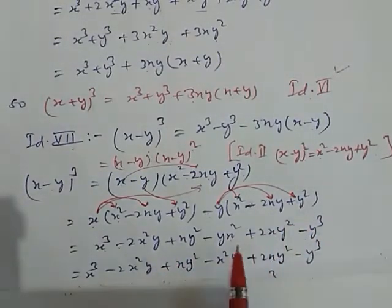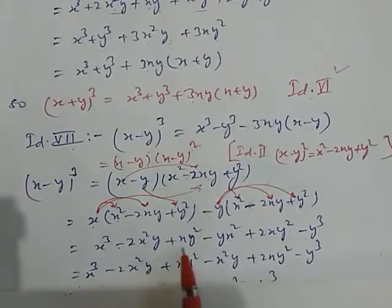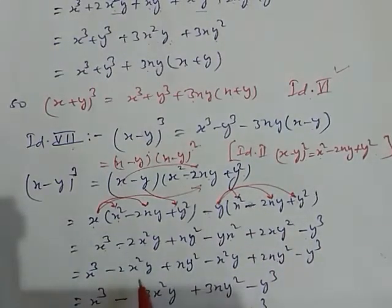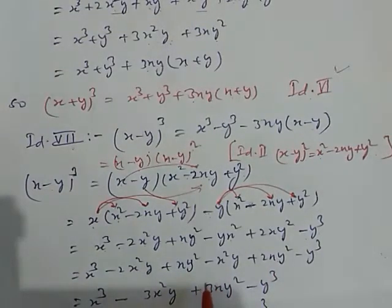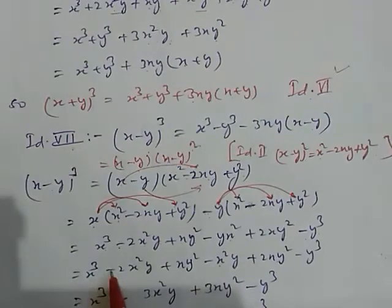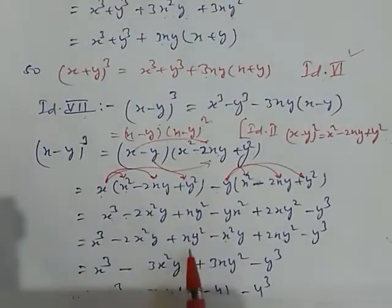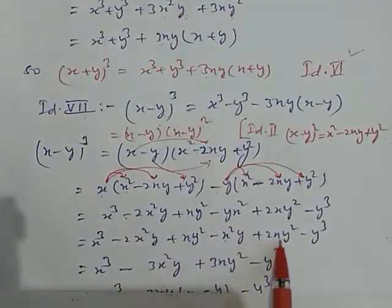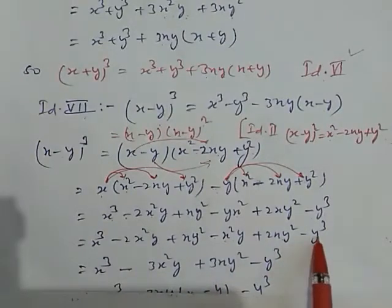Now rearrange them. Here: x cubed, minus 2x squared y, plus xy squared. This yx squared can be written as x squared y. 2xy squared, minus y cubed. Now check where the similar terms are. Twice x squared y and x squared y are the same term, having the same sign — we add them. Twice x squared y minus x squared y becomes minus 3x squared y. And xy squared plus twice xy squared are also the same terms having the same sign, so we add them: xy squared plus twice xy squared becomes 3xy squared.